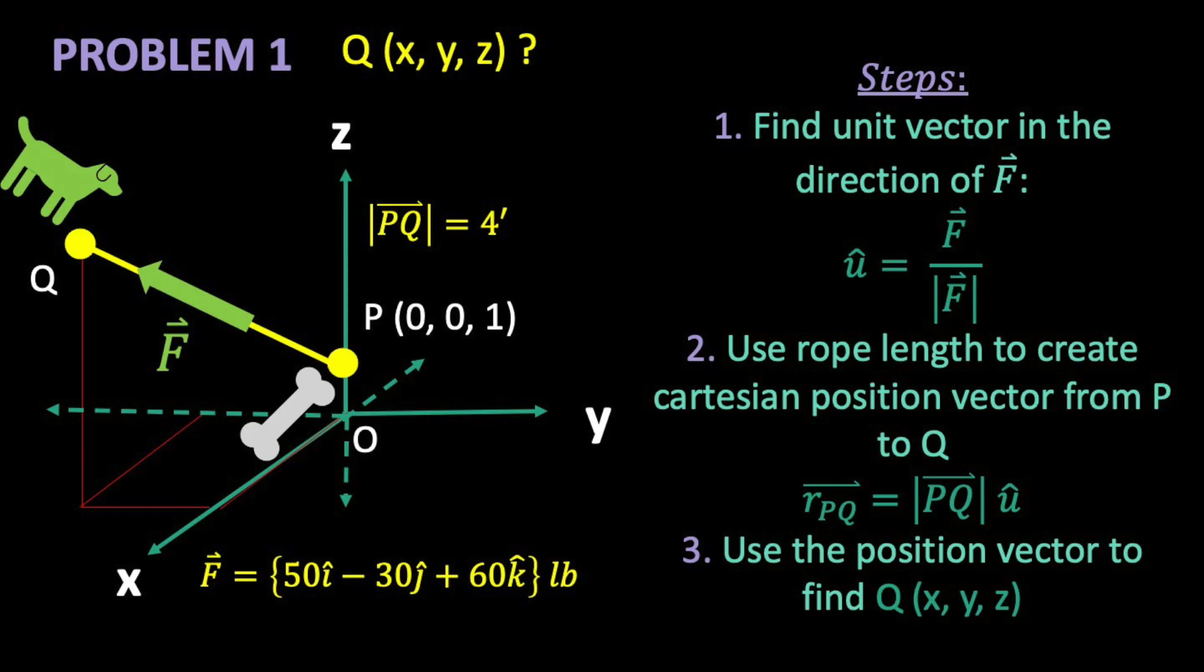First, we find a unit vector in the direction of F. We use that to create a Cartesian position vector going from P to Q. Then we use that and the coordinates of point P to find the coordinates of point Q. Why don't you pause and give it a try on your own?